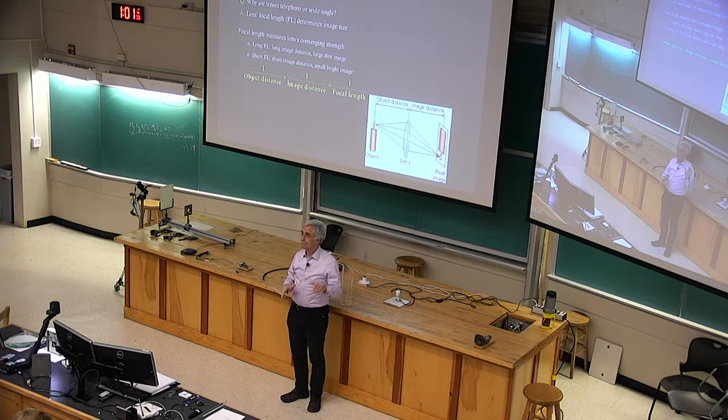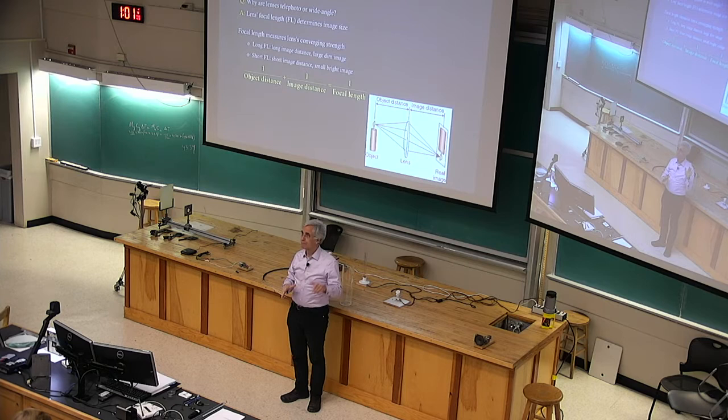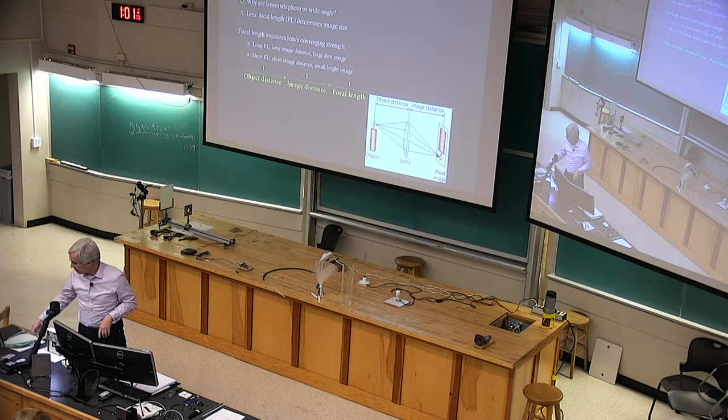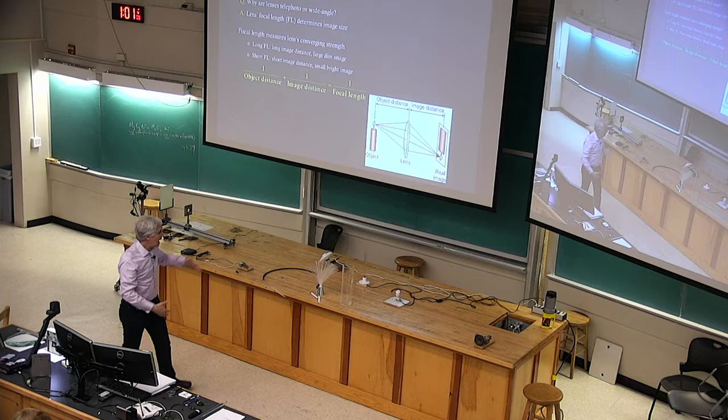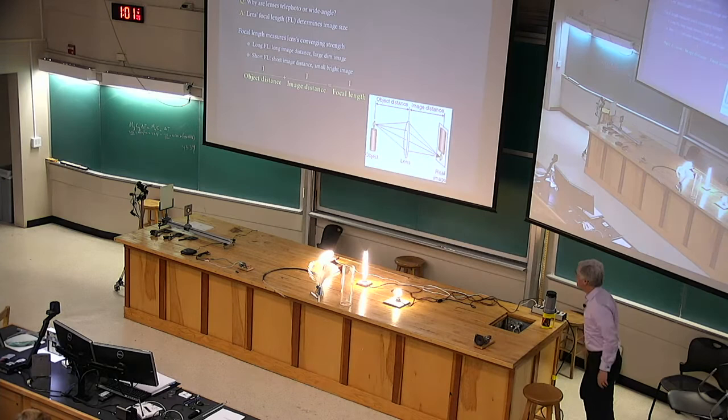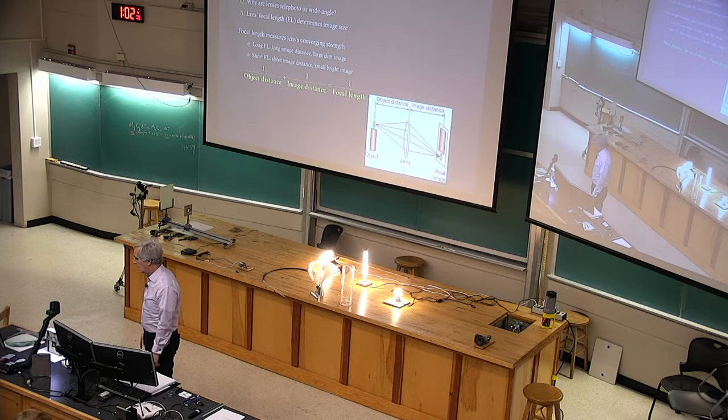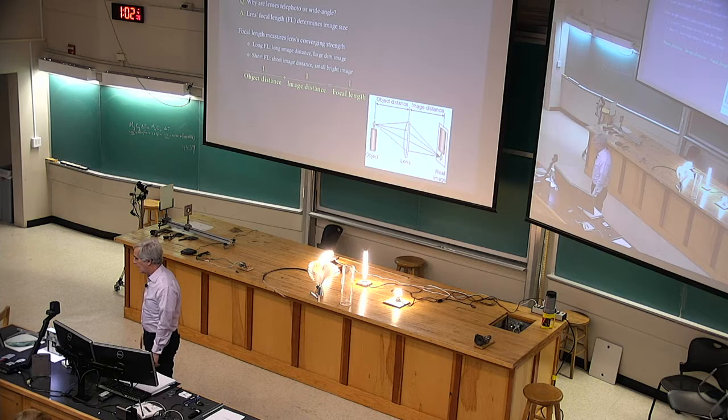Any questions about the basic idea of making a real image? It's real because it's a pattern of light you can put your hand in, you can put an image sensor in. That's as opposed to a virtual image. Real images always form on the far side of a lens. If the objects are out here and the lens is here, the real image forms on the far side.